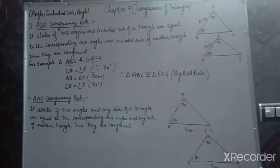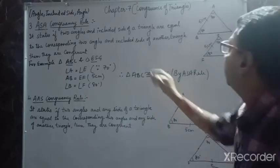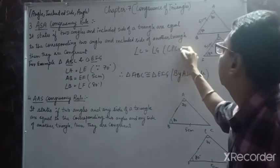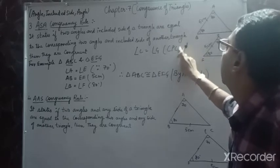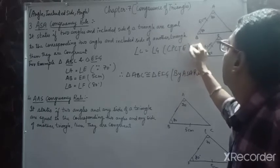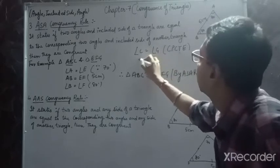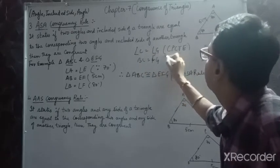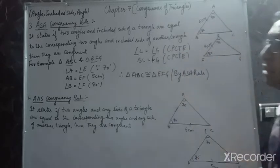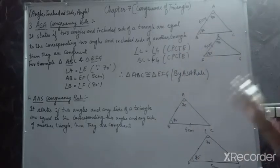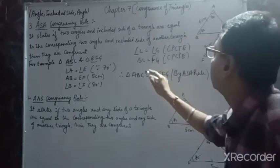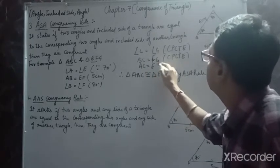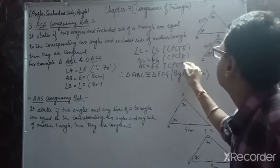Now, angle C is equal to angle G by CPCT. Even BC is equal to FG by CPCT. All the remaining corresponding parts are equal to each other by CPCT. Even AC is equal to EG, again by CPCT.